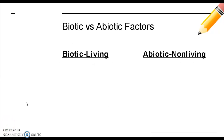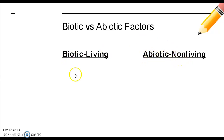Ecosystems are full of both biotic and abiotic factors. Biotic means living, and abiotic means nonliving. Any time you see an A in front of a word, that means not. In the puzzle pop-up question, I'd like you to make a list of as many biotic and abiotic factors that you can think of.